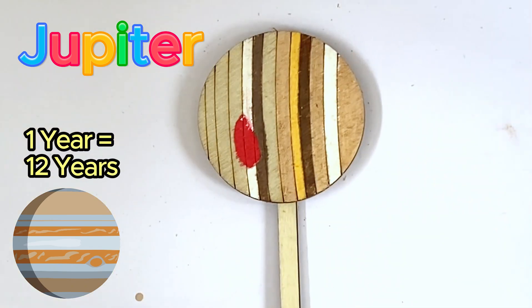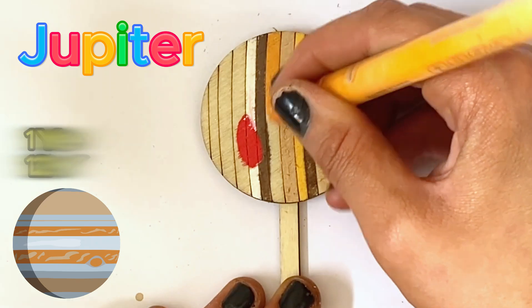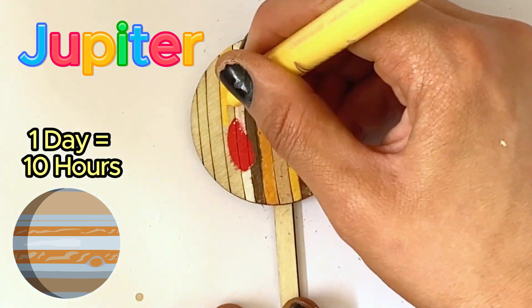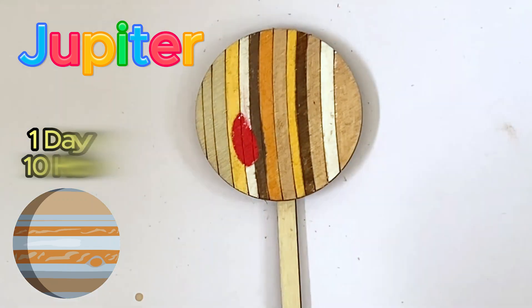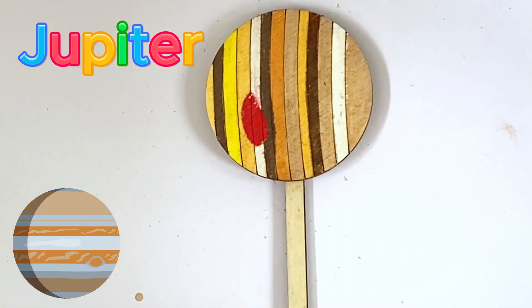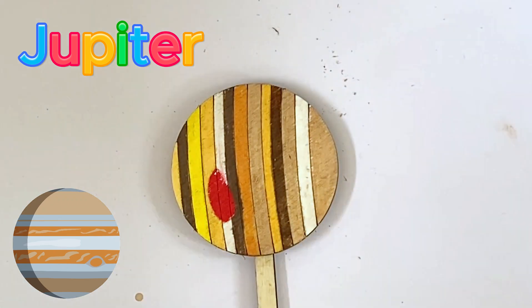And it takes Jupiter approximately 12 years to orbit the Sun. And a day or one rotation on Jupiter's axis is just less than 10 hours. And Jupiter has 95 official moons. And here is our finished Jupiter.